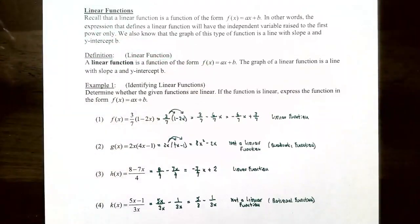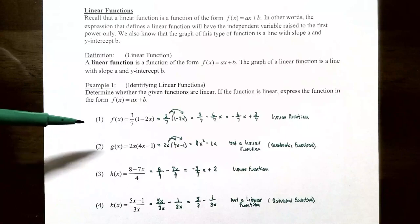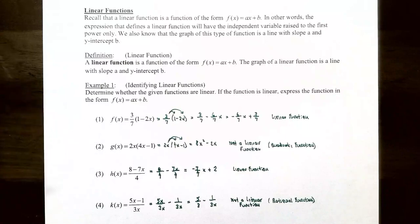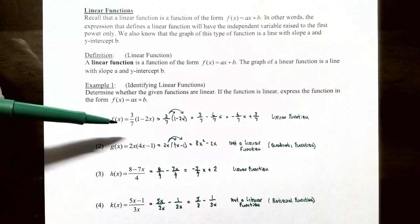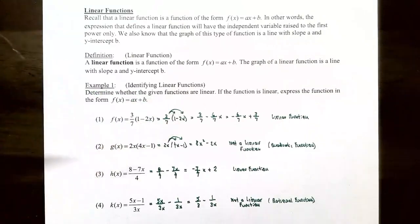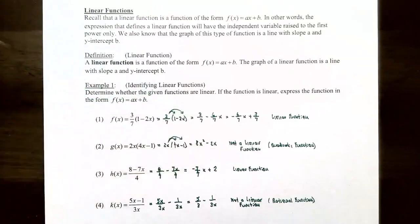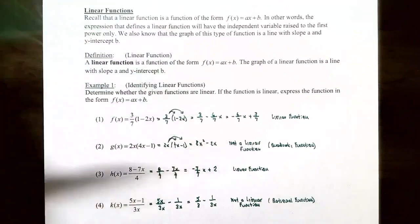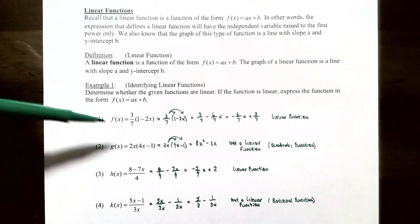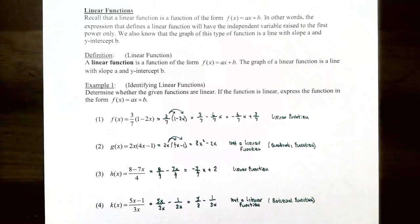Example one: we're going to identify which of the following are linear functions and which ones are not. Determine whether the given functions are linear; if linear, express the function in the form f(x) = ax + b. Number one: f(x) = (3/7)(1 - 2x). Distributing 3/7 gives 3/7 minus 6/7 x, which rearranges to negative 6/7 x + 3/7. This is a linear function with slope a = -6/7 and y-intercept b = 3/7.